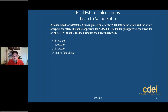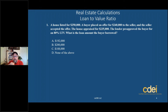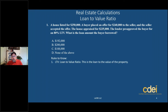The appraisal came back at $235,000, which is $5,000 less than what it's under contract for. The lender pre-approved the buyer for an 80% loan to value ratio or LTV. What is the amount the buyer borrowed? You've got to know a couple of rules of thumb. First, what is LTV? That means loan to value ratio.